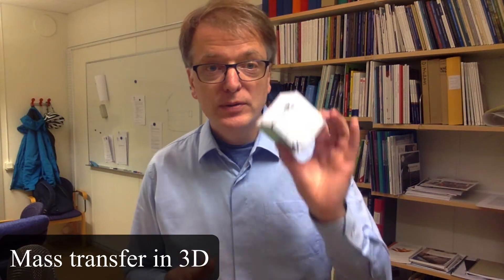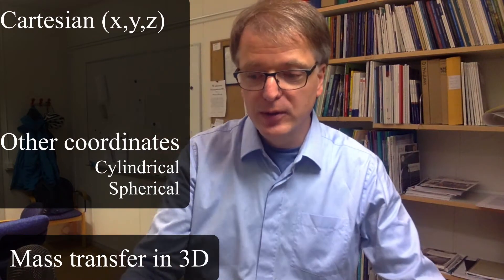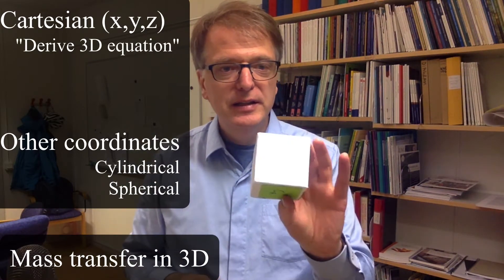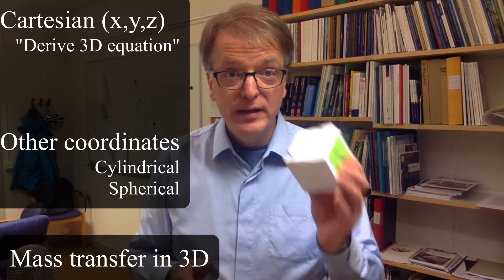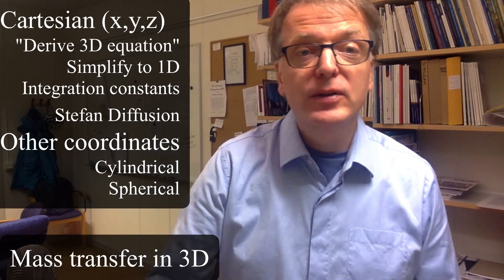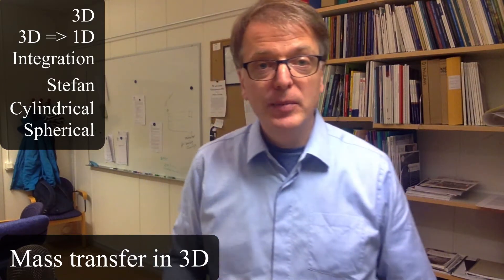Let's talk about mass balances in three dimensions using Cartesian coordinates, and then also cylindrical and spherical coordinates. We'll start by deriving an equation in 3D using Cartesian coordinates, then simplify it back to 1D and look at integration constants. We'll also derive the Stefan diffusion equation from the 3D equation, and understand when to use different coordinate systems.